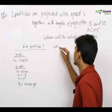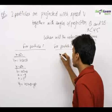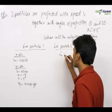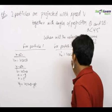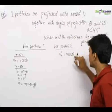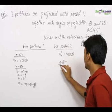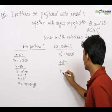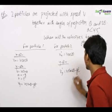For particle two, similarly, the x component of the velocity will be v cos 2 theta. Because the angle of projection for this particle is 2 theta. For y direction, we follow the similar pattern to get y component of the velocity to be v sin 2 theta minus gt.